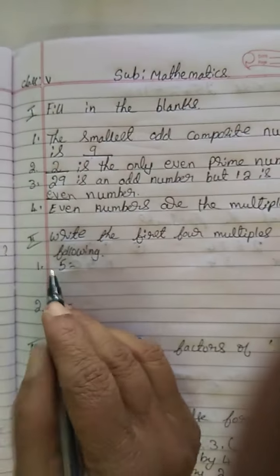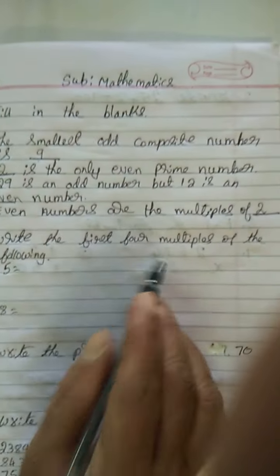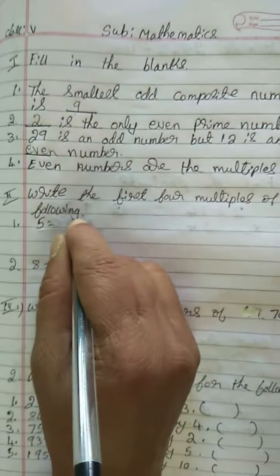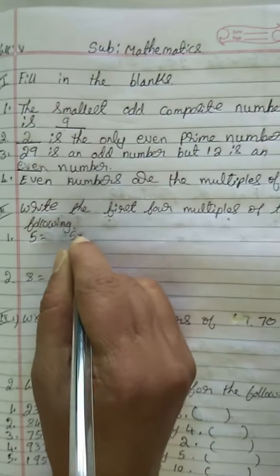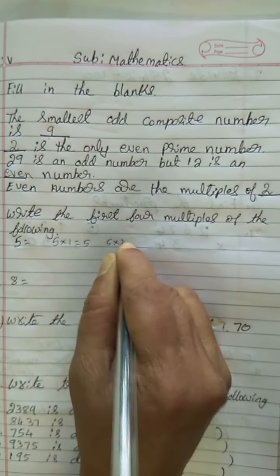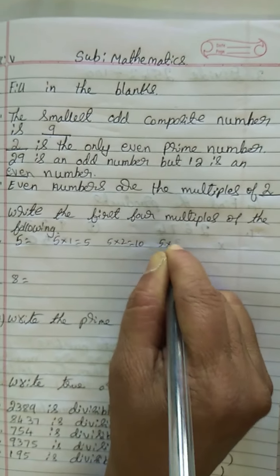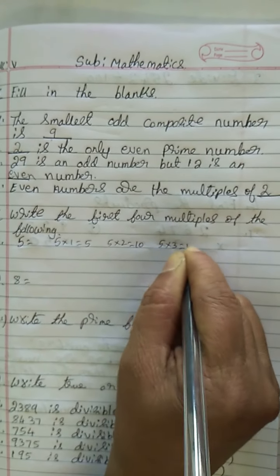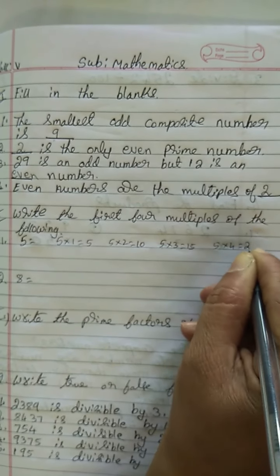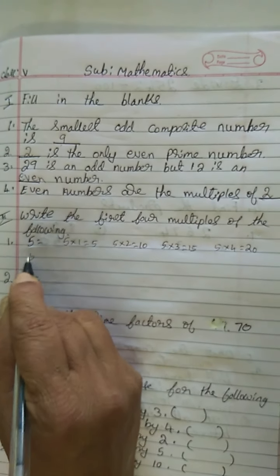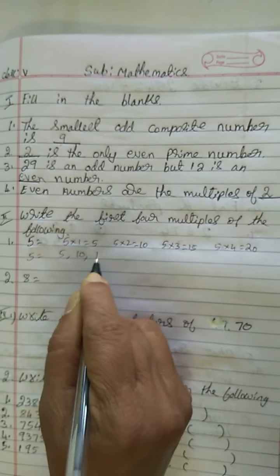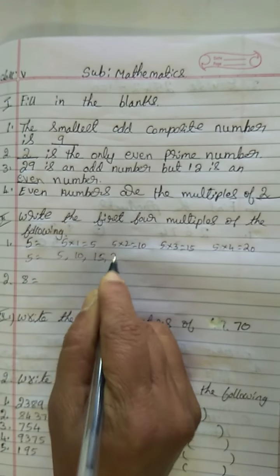See second section: write the first 4 multiples of the following. First 4 multiples — see, 5×1 is 5, 5×2 is 10, 5×3 is 15, 5×4 is 20. So first 4 multiples of 5 are: 5, 10, 15, 20.